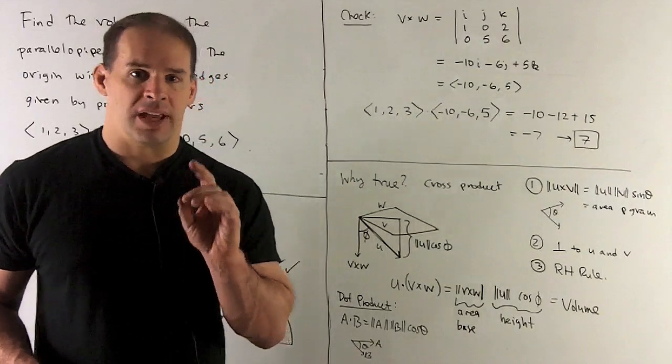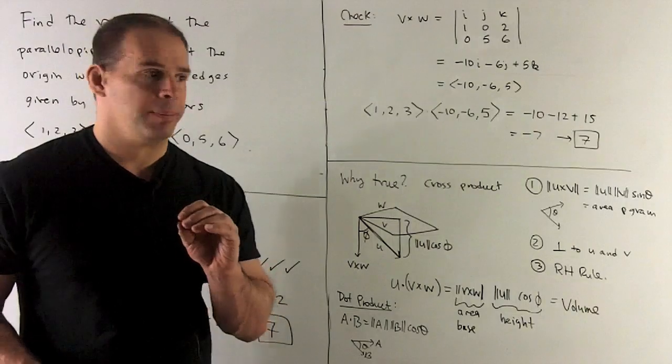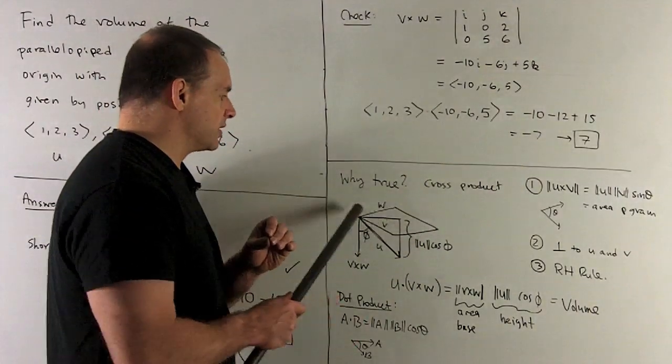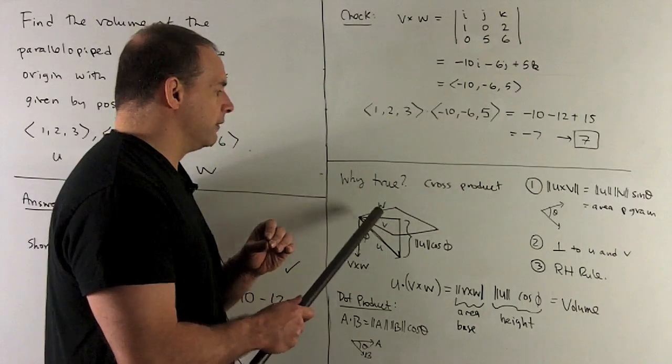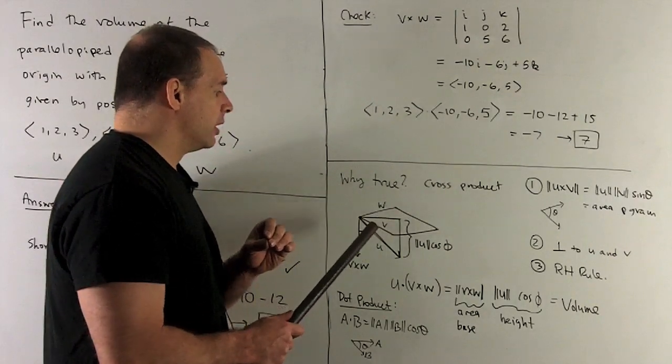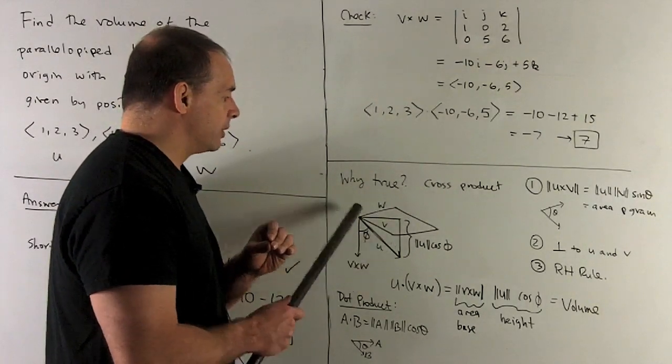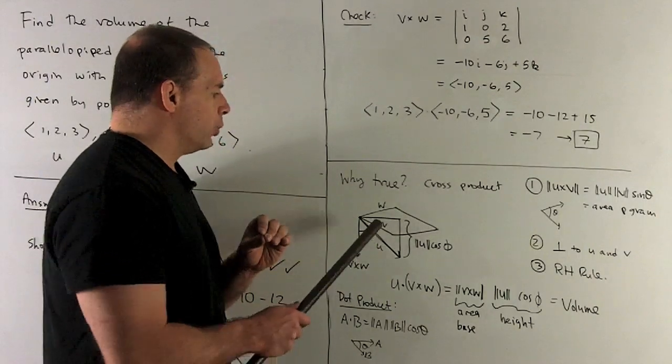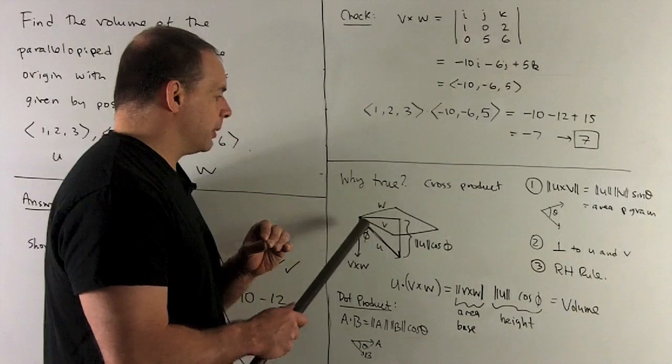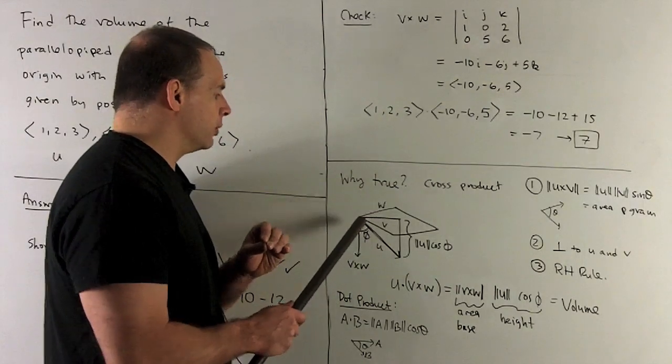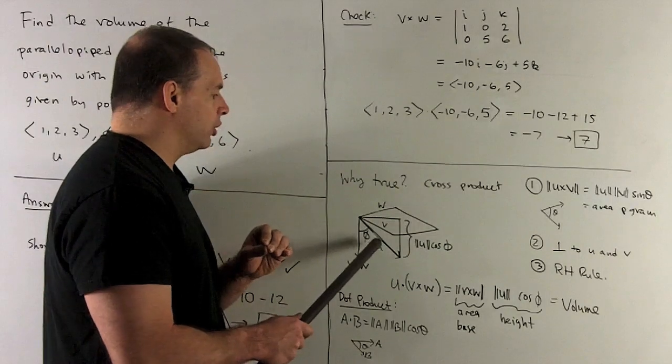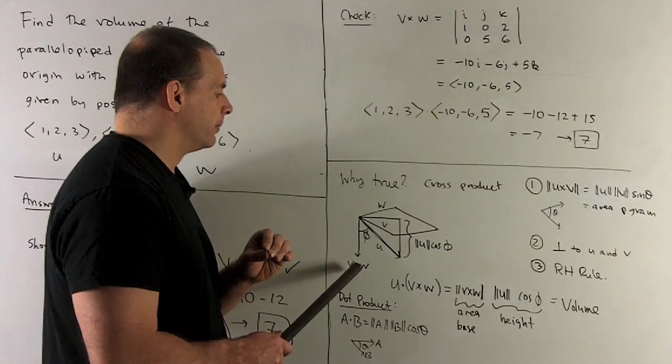All right, let's take a look at our parallelepiped. So we know about the base, okay, the area of this is length of the cross product of V and W. So if I draw on our third edge that's adjacent to the origin U, let's take a look. We know that the cross product is going to be perpendicular to V and W, so I can draw it in like that. I'll call phi the angle between U and the cross.